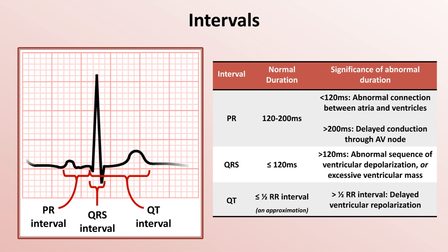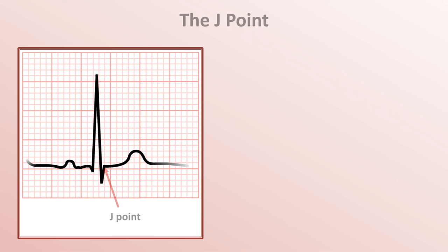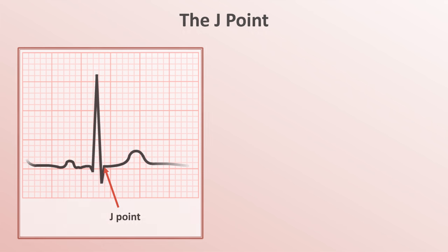The normal duration for the RR interval isn't listed here as it's a function of heart rate, and normal heart rates will also be discussed in a future lecture. Finally, there is one more component of the waveforms of which you should be familiar. The specific point where the QRS complex connects to the ST segment is known as the J-point — J for junction. Identifying the J-point will become important when distinguishing acute cardiac ischemia from a normal variant. That concludes this lecture on waveforms, segments, and intervals. The next lecture will discuss EKG leads.